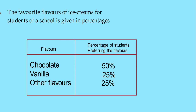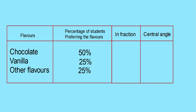Now we can discuss drawing pie charts. Here is some information: the favorite flavors of ice cream for students of a school given in percentages — chocolate 50%, vanilla 25%, other flavors 25%. You have to draw a pie chart for this information. We need to change these percentages into fractions, then find the central angles. We can make a table containing all this information.